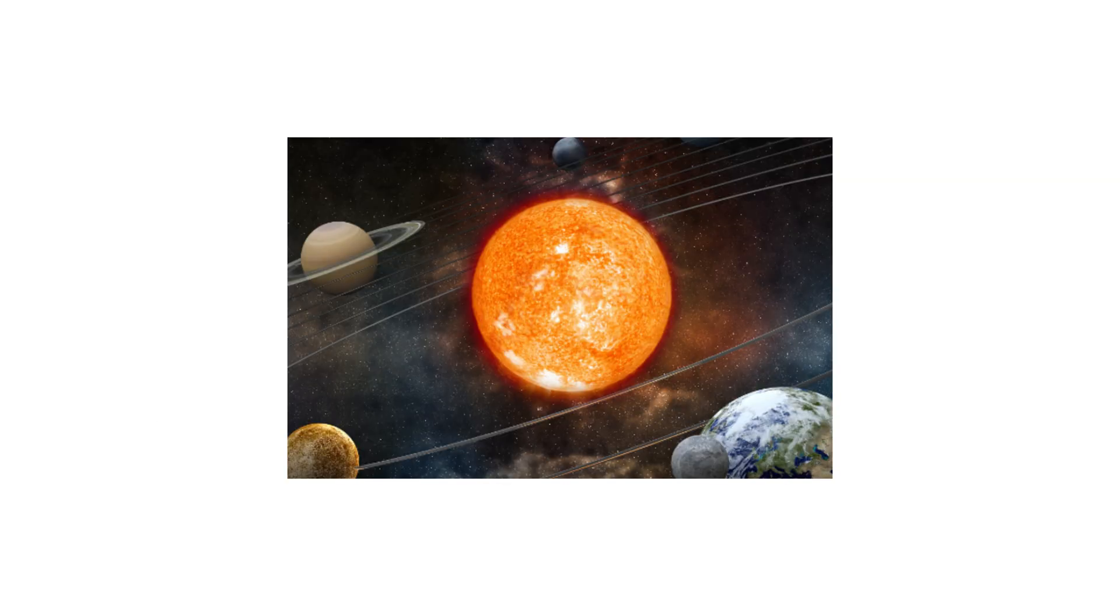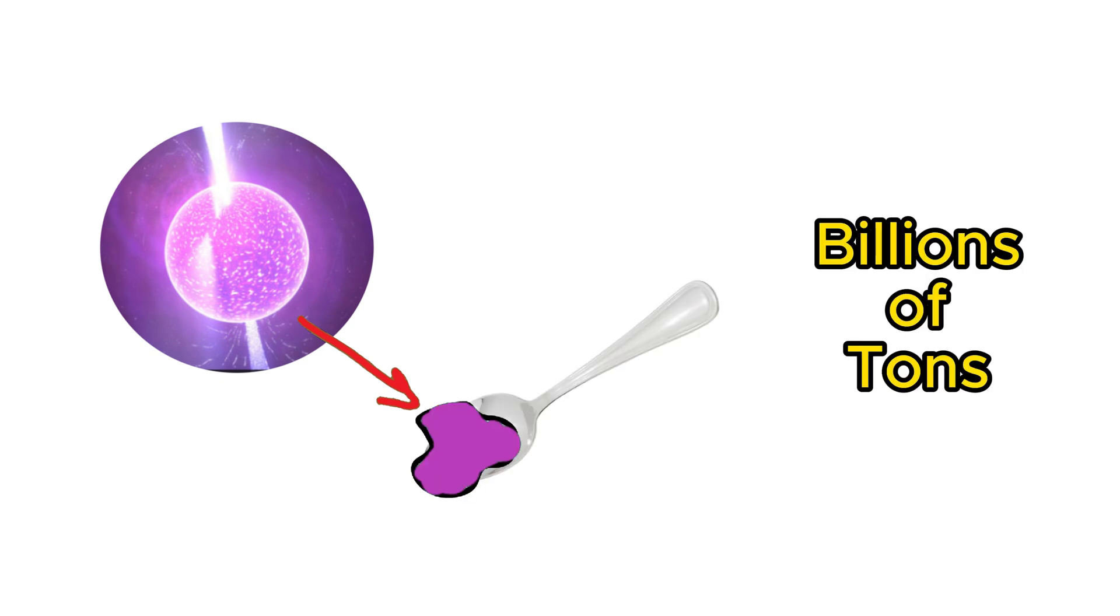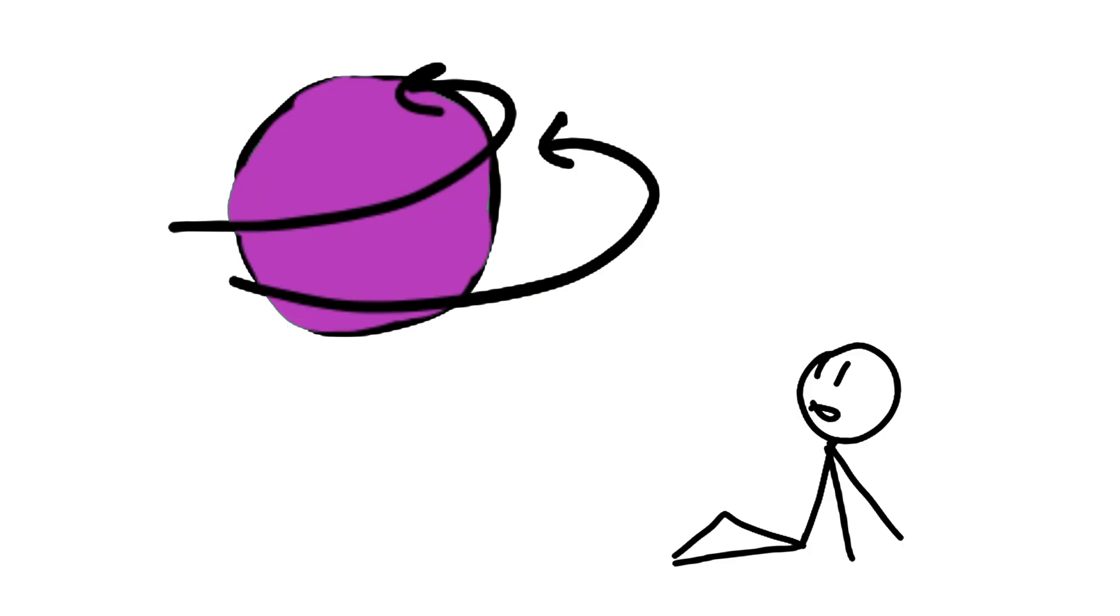Neutron stars are extremely dense, packing more mass than our sun into a sphere about the size of a city. Because they are so dense, a teaspoonful of material from a neutron star would weigh billions of tons on Earth. These stars also spin very fast, sometimes hundreds of times per second.